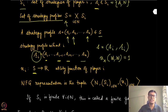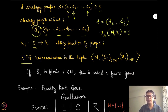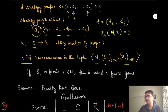In a normal form game, abbreviated as NFG, the representation is succinctly given by a tuple of three things: the set of players N, their strategy sets, and their utilities. These three things completely define a normal form game, and that is what we are going to use in the rest of the course.